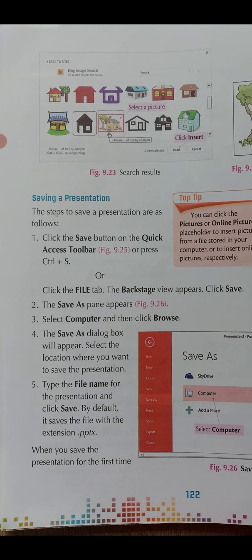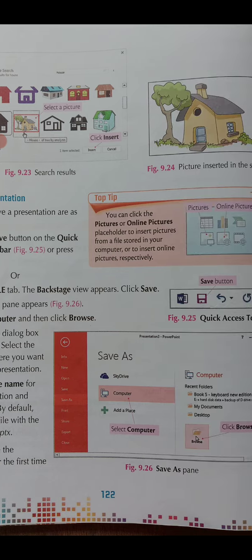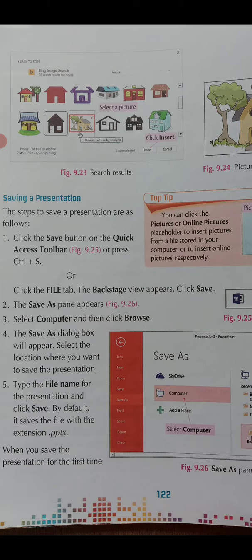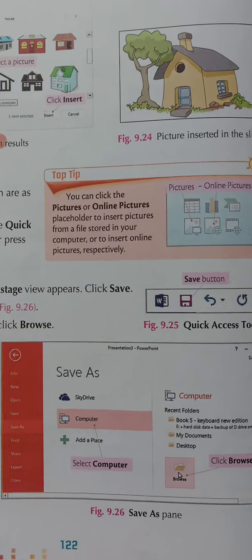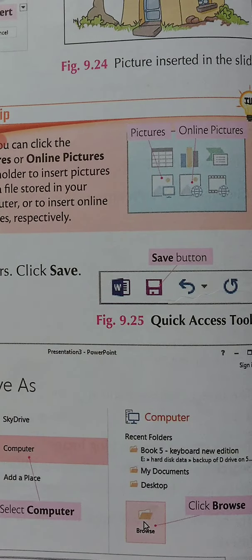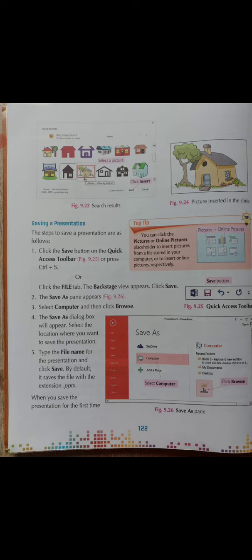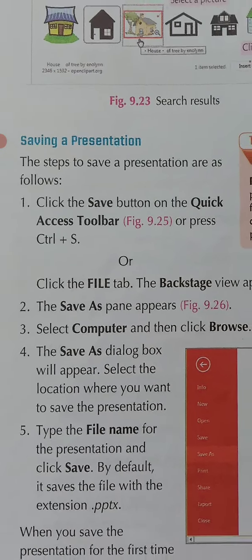Step 1: Click the save button on the quick access toolbar — as shown in figure 9.25 — or press Ctrl+S. In figure 9.25 you will see the quick access toolbar, where the save button is shown with an arrow. So firstly, you are going to click the save button, or use the shortcut key Ctrl+S.